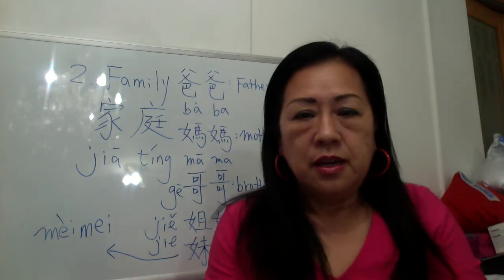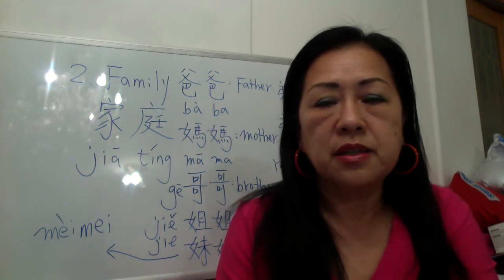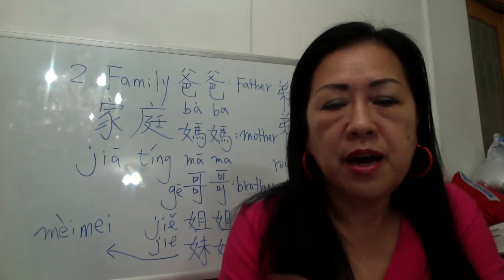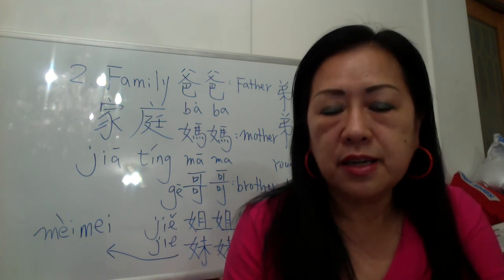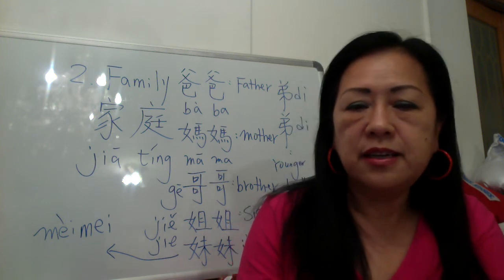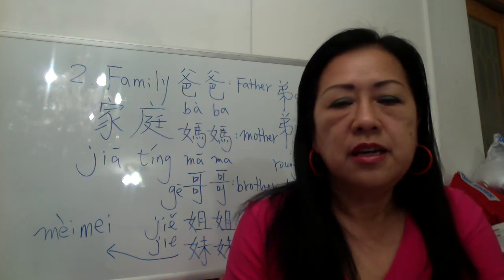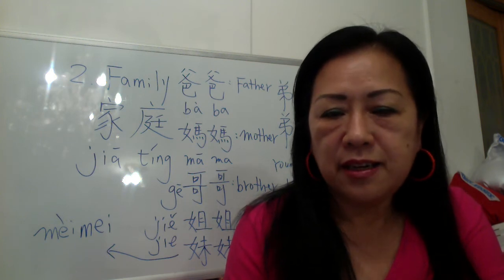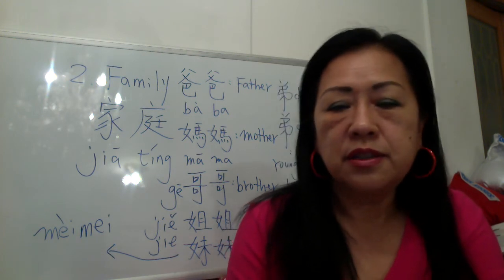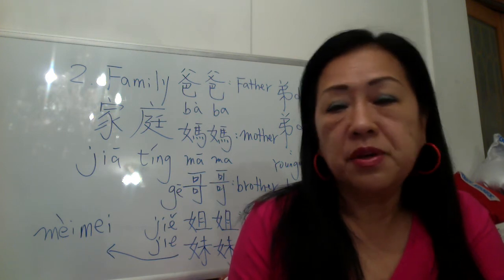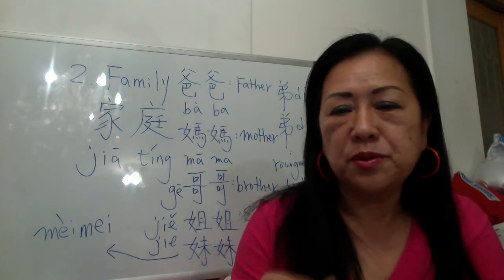If your family has two brothers, the older one you say 大哥, the second one 二哥, the third one 三哥. For sisters: the oldest is 大姐, second is 二姐, third is 三姐. For younger sisters: 小妹, 二妹, 三妹. The numbers are 一, 二, 三.